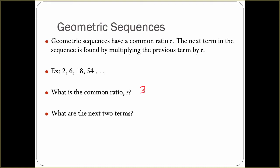Our next two terms would be 3 times 54, which is 162, and then 3 times 162 is 486.